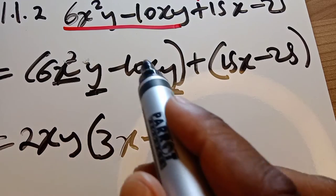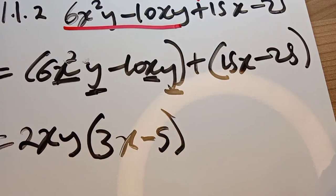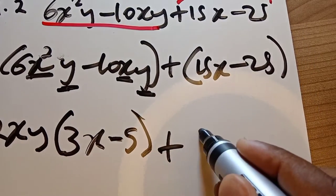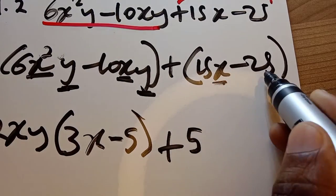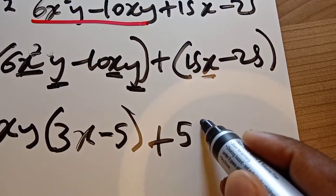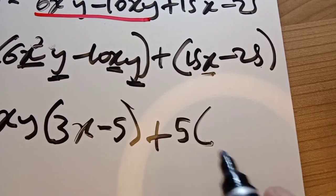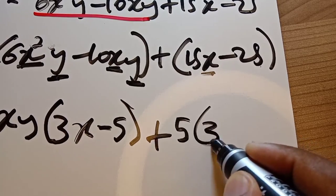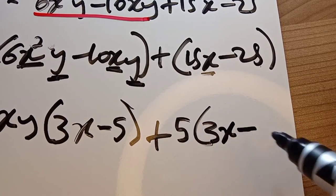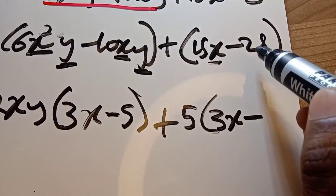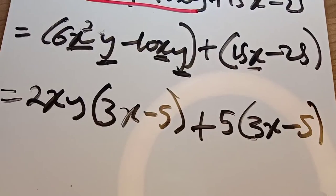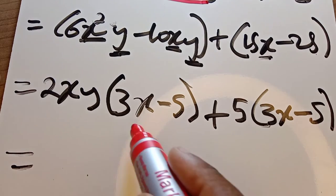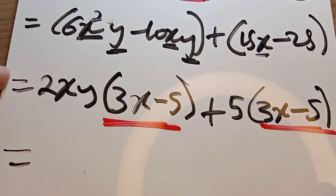For the second bracket, 15 and 25 are divisible by 5. There is no x common to both terms so we cannot take x out. 15 divided by 5 gives 3 — the x remains — then minus 25 divided by 5 gives 5. We close the bracket. Now we have two brackets and when we check, both brackets contain the same expression.